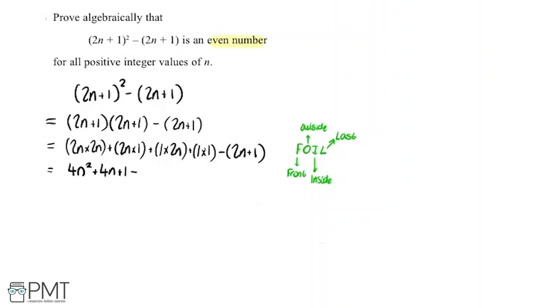I'm going to subtract from that here our 2n minus 1. Okay, so we've got 4n² + 4n + 1. And we're subtracting all of this in brackets.